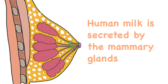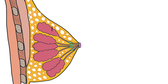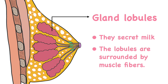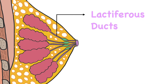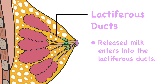Human milk is secreted by the mammary glands, so this implies the importance of knowing the structure of mammary glands. There are special epithelia lying in small sacs called lobules — it helps to secrete milk. The lobules are surrounded by a layer that contains muscle fibers. When the muscle contracts in the gland, it causes milk to be released.